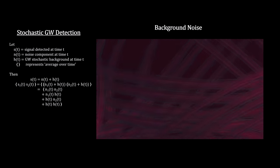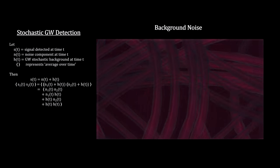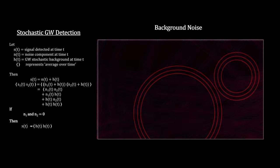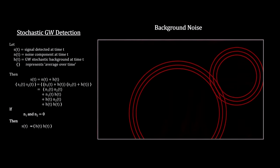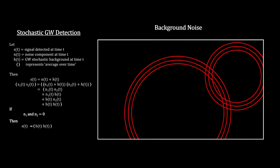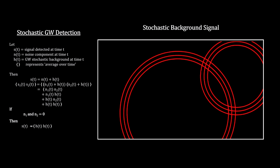Unlike the other gravitational wave signals, the stochastic background would just appear as noise in a single gravitational wave detector. Assuming that the noise in each detector is statistically independent from one another and because the time average for noise is zero, multiple detectors can factor it out.